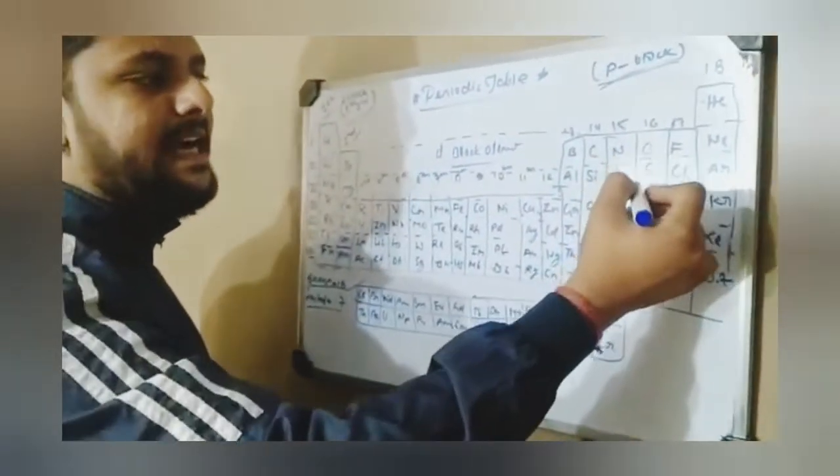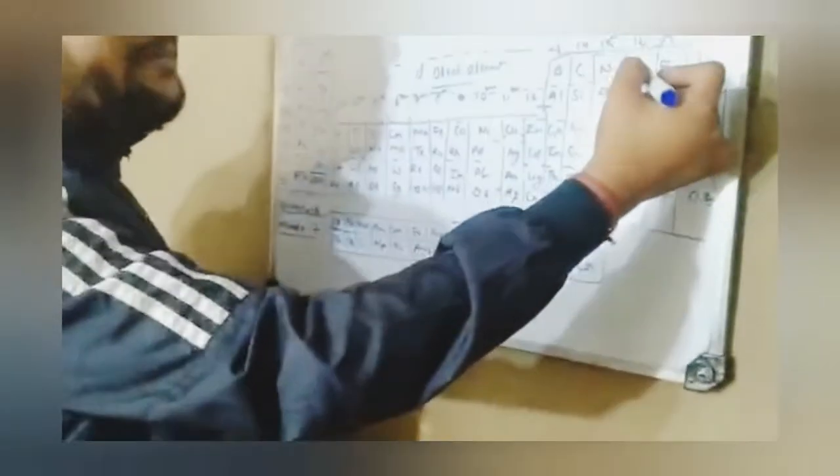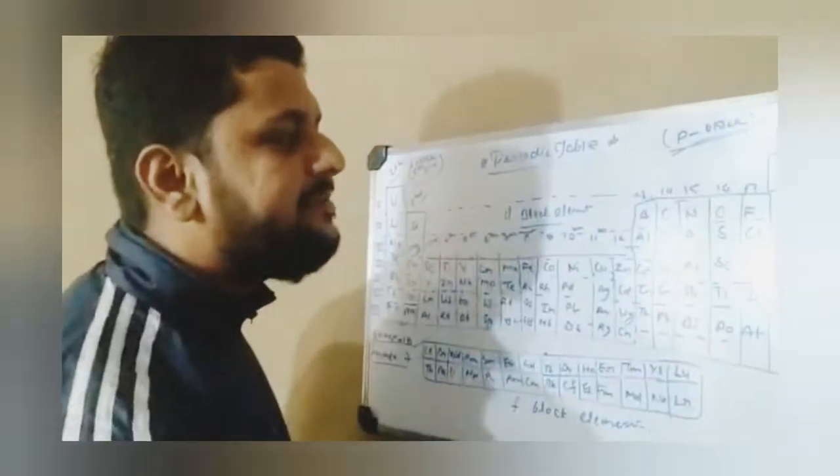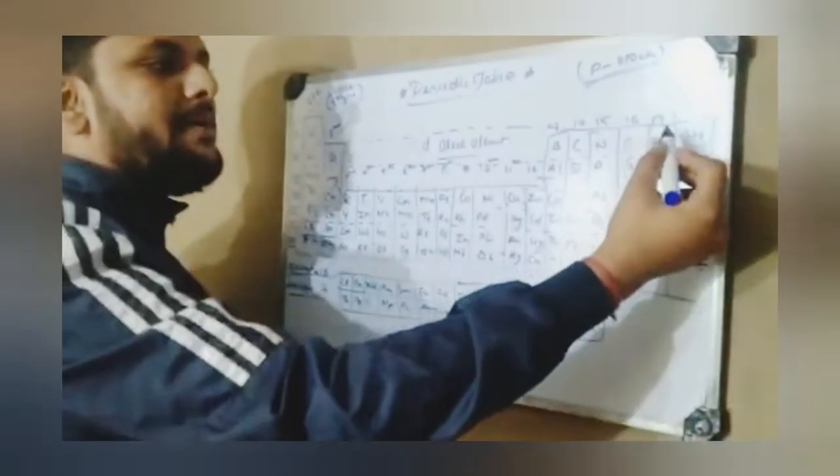Group 16 elements: Oxygen, Sulphur, Selenium, Tellurium and Polonium. Now group 17 elements.